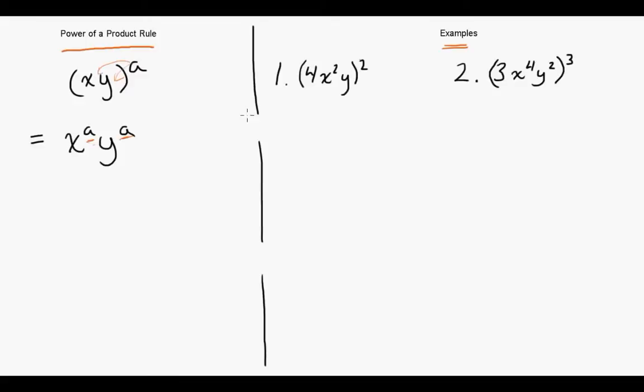Let's take a look at an example. Here we have 4x squared y all squared. So we're going to distribute this 2 into the entire bracket. So we're going to get 4 squared, x squared squared, and y squared.